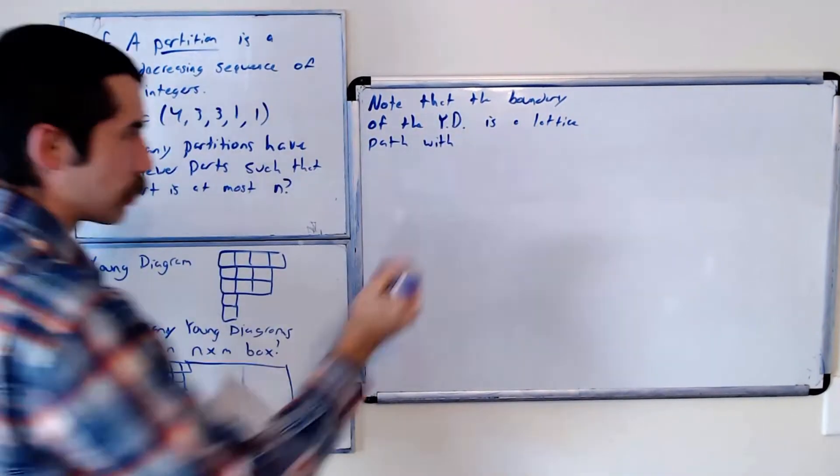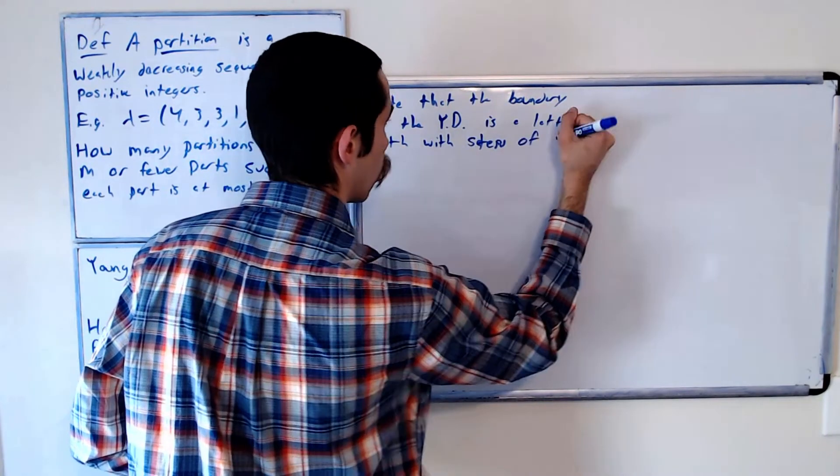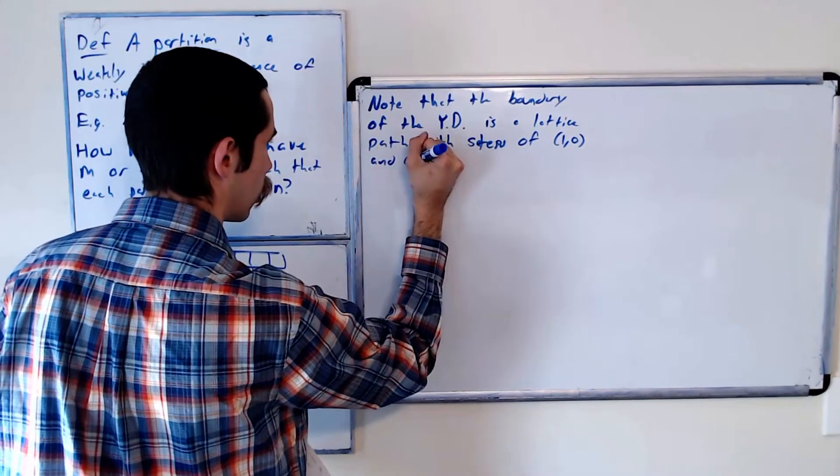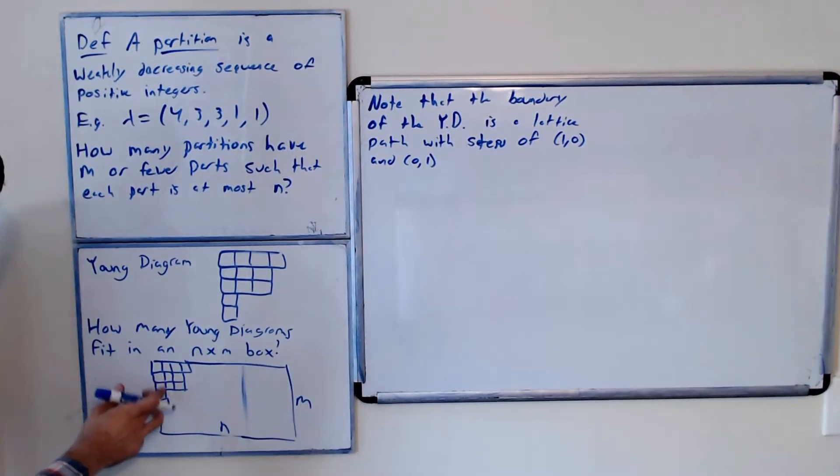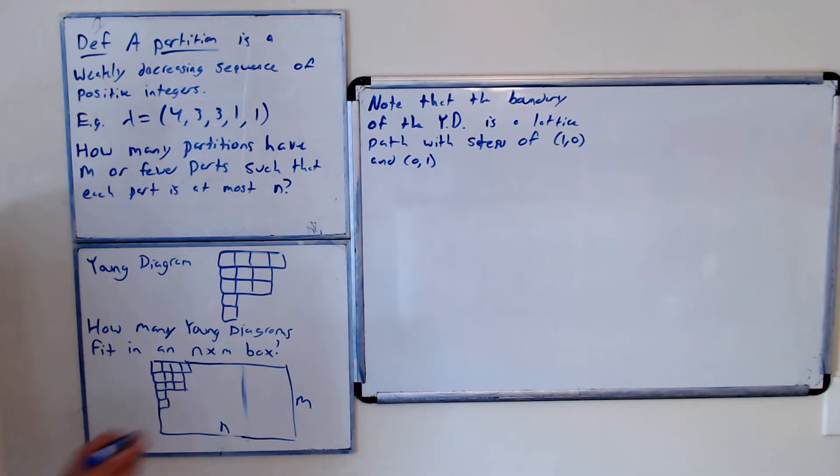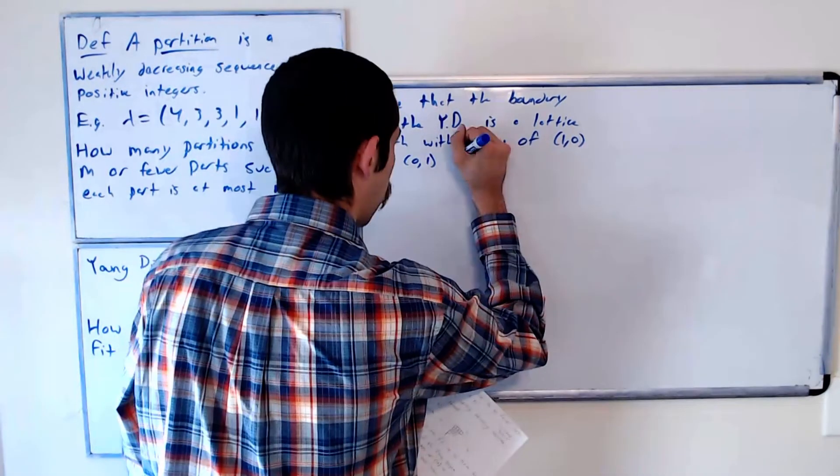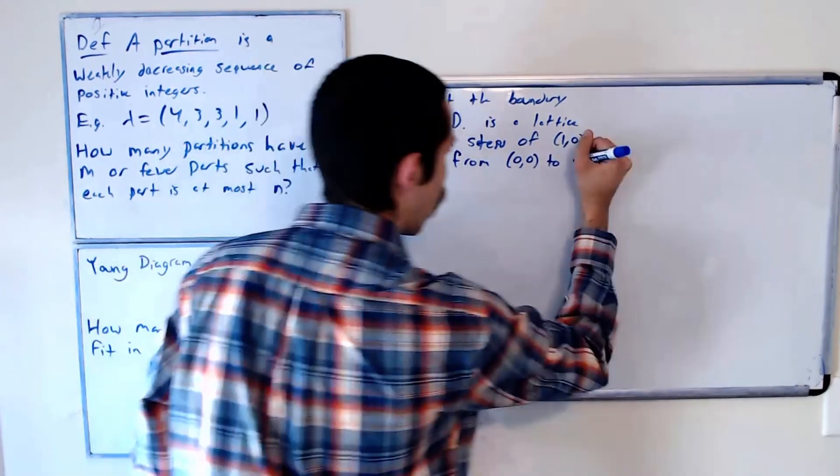(1,0) and (0,1), right—north steps or east steps. If we just look at this boundary here, you can see it's north steps or east steps from the origin to the point (N,M).